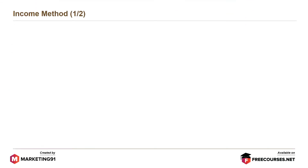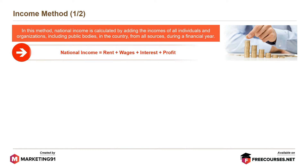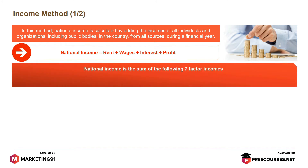The next type is the income method. In this method, national income is calculated by adding the incomes of all individuals and organizations, including public bodies, in the country, from all sources during a financial year. National income equals rent plus wages plus interest plus profit. National income is the sum of the following seven incomes.